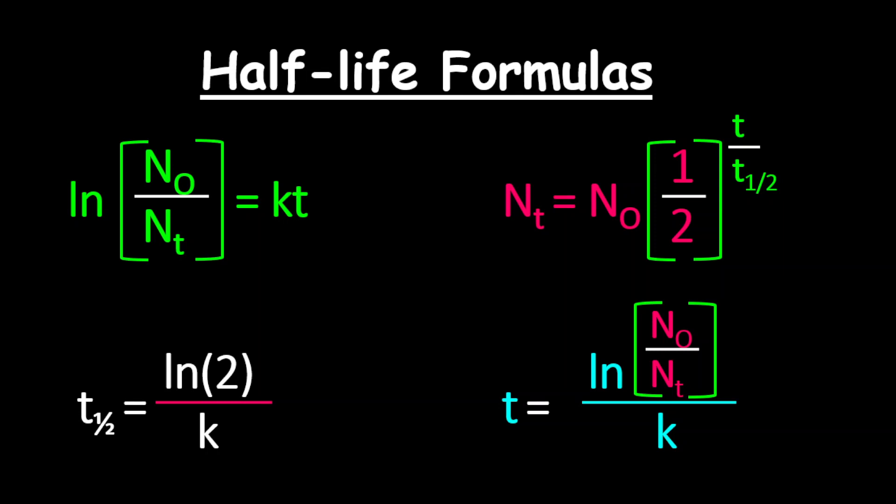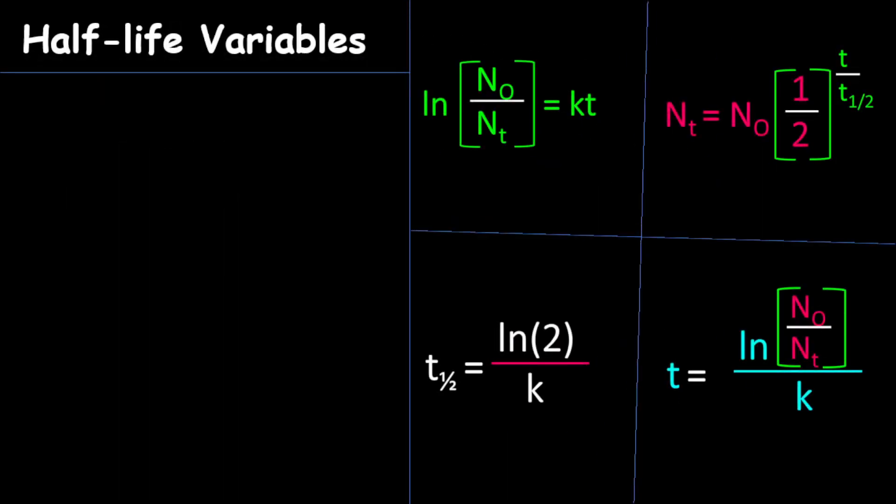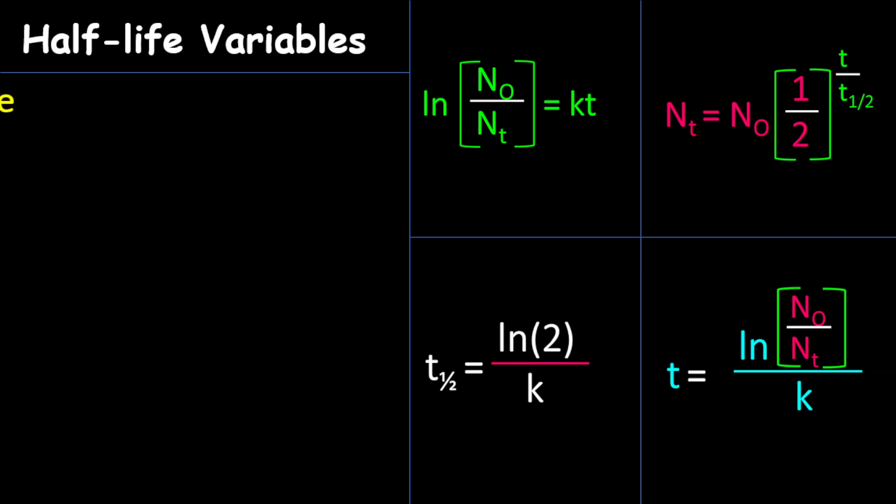However, before you can use these formulas effectively and even know when to use them, it is very important for you to understand and know the meaning of the variables used in the formulas. And so looking through the formulas, you will notice you see t½, and t½ is half-life. And half-life is the time taken for half of a sample to decay, or the time taken for a nucleus to divide or disintegrate into a half.